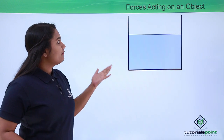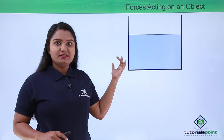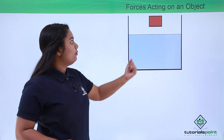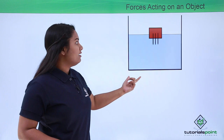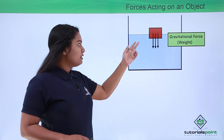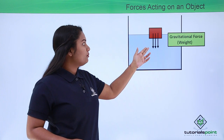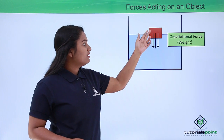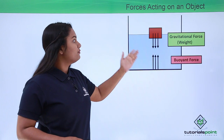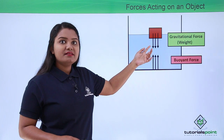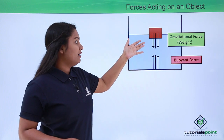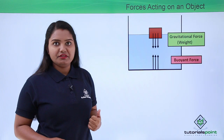In the previous videos we have already seen that when we place an object on the surface of a fluid, there are a few forces acting on it. The first one is the weight of the object, that is the gravitational force, and the second force is the buoyant force which the fluid exerts on the object. These two forces act in opposite directions to each other.